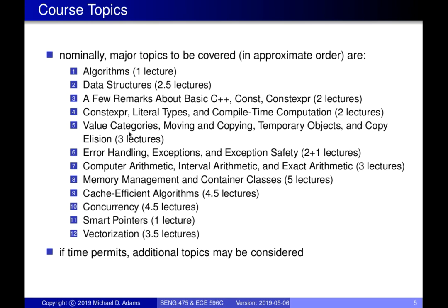Then we'll talk about copy elision, types of optimizations, and temporary objects. Then exceptions, some stuff about computer arithmetic — finite precision arithmetic doesn't give you the exact answer and causes no end of grief in a lot of application areas. Then memory management, container classes, cache-efficient algorithms, concurrency, smart pointers, and vectorization. I think we should be able to get through all of that material, just as we did last year.